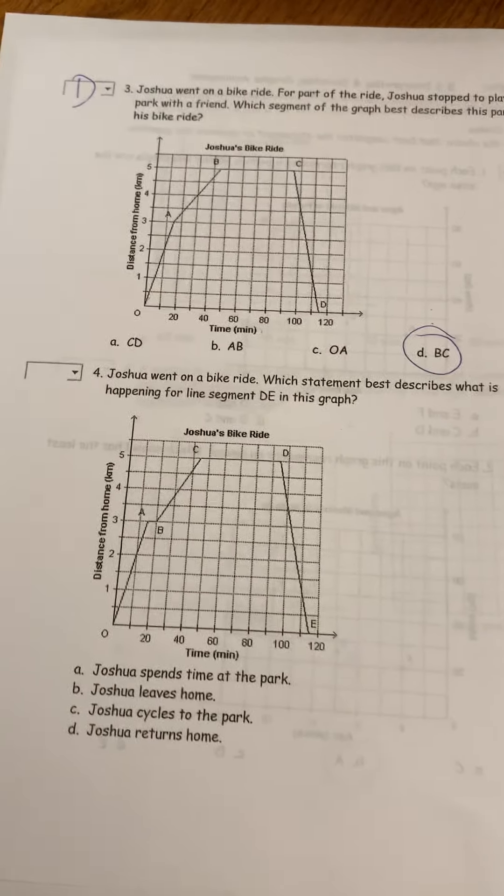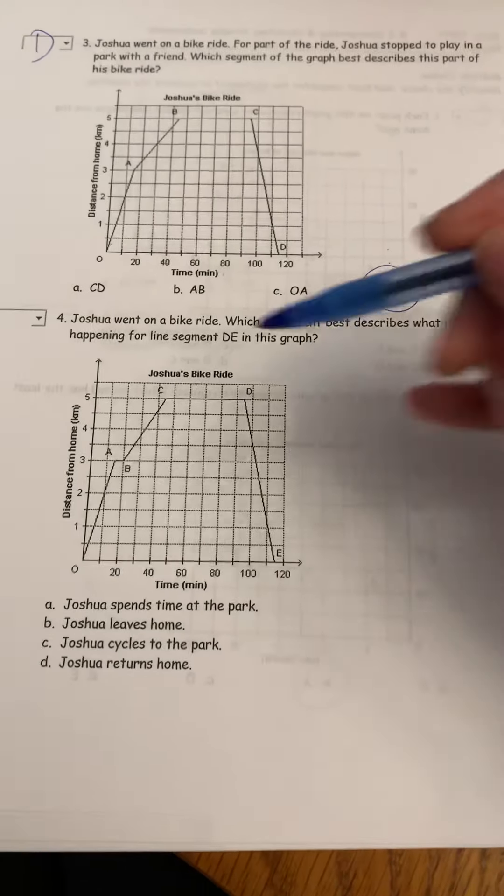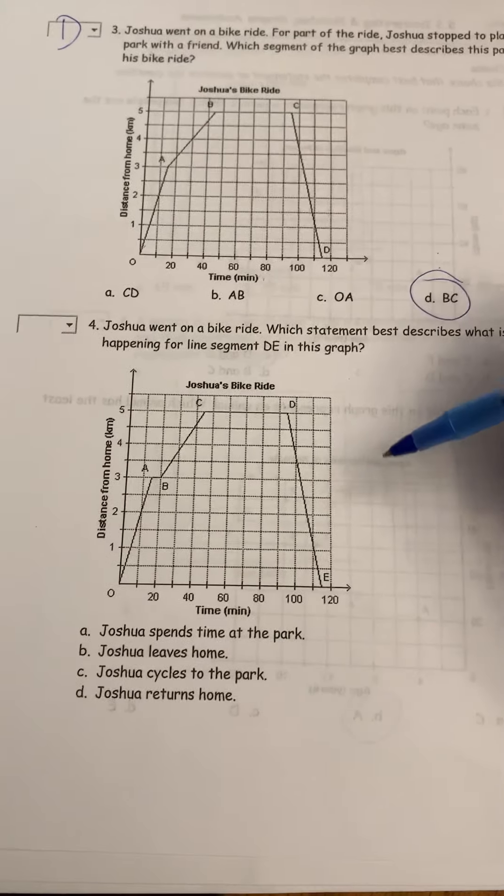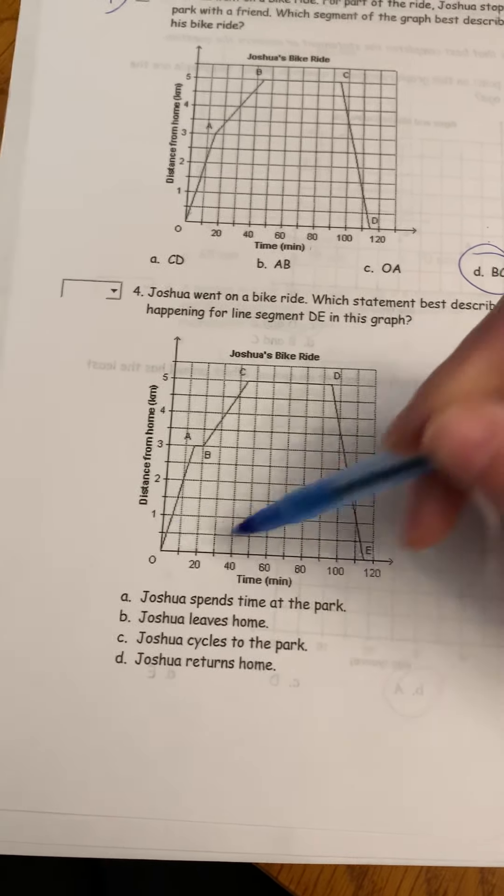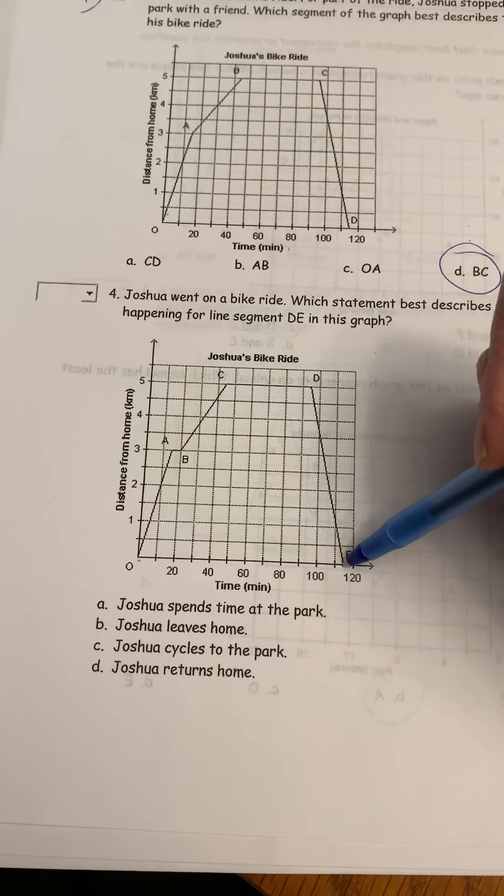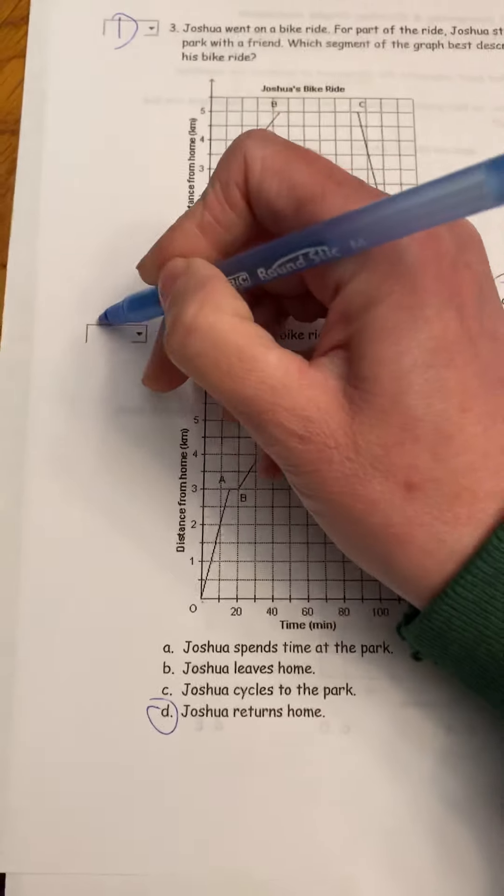Same question about Josh's bike ride. Which statement best describes what's happening for section D.E.? So D.E. we just talked about it in the last one. It looks like Josh is returning home because when we get down to here, he is zero kilometers from home. He went on an almost two-hour bike ride. So answer there should have been D.